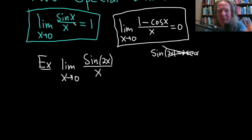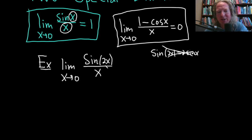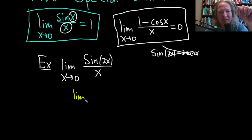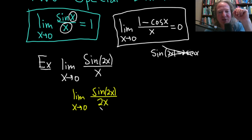In the formula, you have sin x over x — the key point is that the argument of sine and the denominator are the same. Here we have 2x on top and x on the bottom, but they're not the same. What we'd like to do is make them the same. So we write the limit as x approaches 0 of sin 2x, and the trick is we really want the denominator to be 2x.